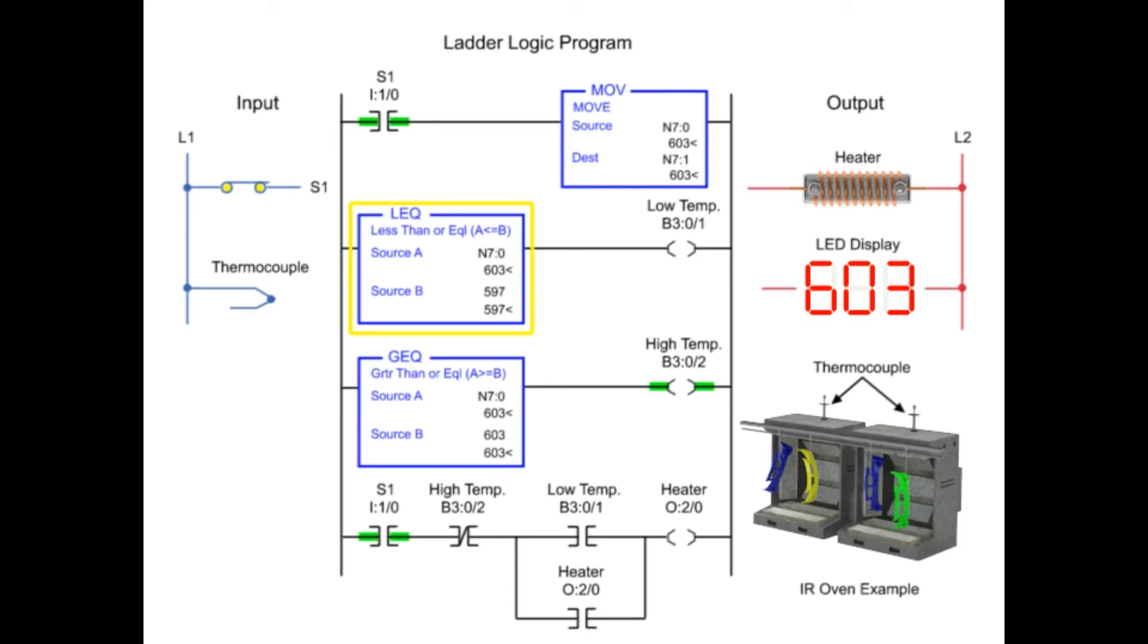Using the less than or equal to and greater than or equal to instructions addressed to the same integer file, the source values of A and B are compared to control the heater. With source A less than source B of the less than or equal to instruction, the low temp and heater outputs are enabled.